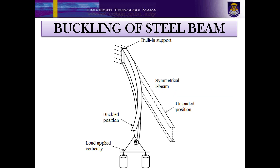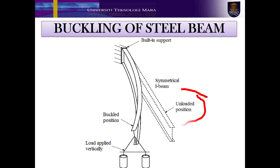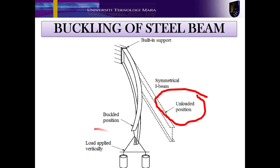As you can see, this picture shows the buckled shape of a built-in cantilever. Under the unloaded position, the symmetrical I-beam is straight. However, once the loads were applied at the end of the cantilever beam, you can observe that the cantilever beam is buckled to this position.